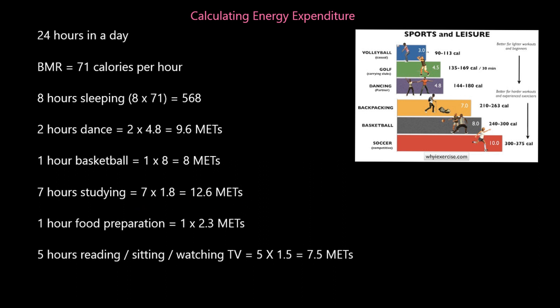1 hour of food prep — actually walking around the kitchen getting food ready, not ordering takeaway — has a MET value of 2.3, so 1 hour times 2.3 MET. Then 5 hours of reading, sitting, watching TV, etc., has a MET value of around 1.5, so 5 times 1.5 equals 7.5 MET.